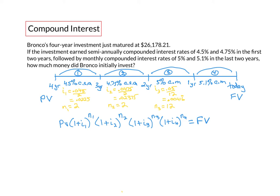And for time interval 4, the periodic interest rate, I4, would be 0.051. Again, it's compounded monthly, so divided by 12. And our number of compounding periods in that time interval would be 12.